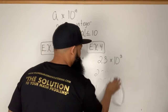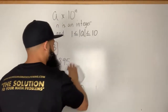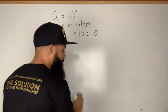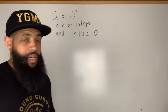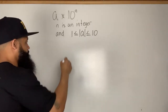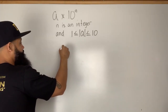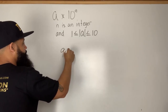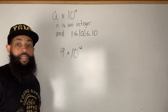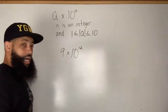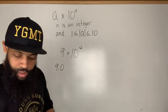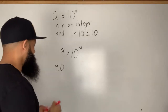I want to do one more example to show what happens with a very large number — like 10 to the eighth power or something like that. It's the same concept. Let's say I have 9 times 10 to the 12th power. We simply make 9 a decimal: 9.0, and I want to move the decimal 12 places to the right.